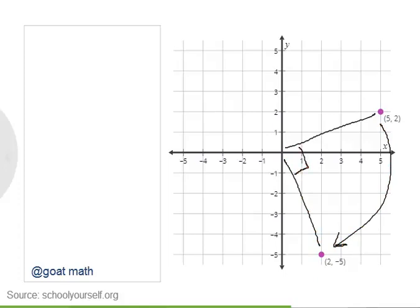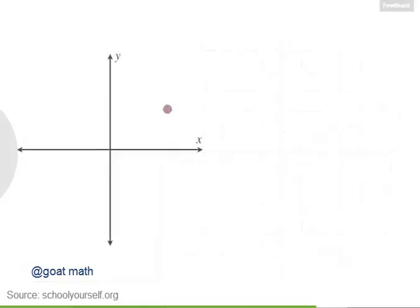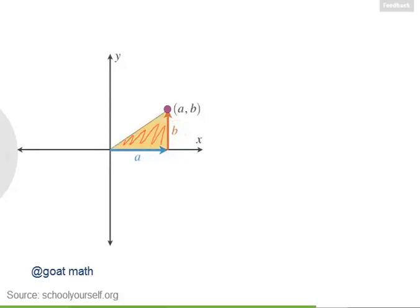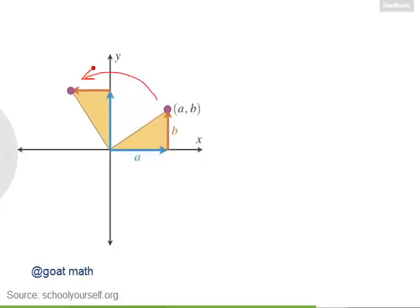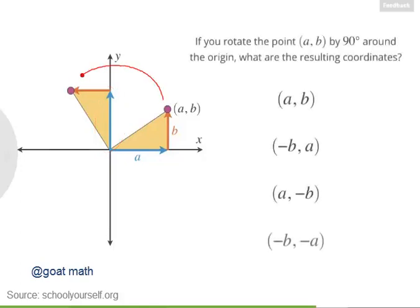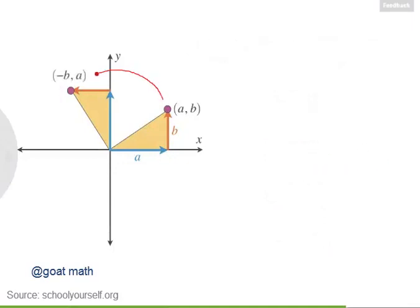Let's see if we can find some patterns in 90 degree rotations. On the coordinate plane, consider the point (a, b) — so it's a units to the right of the y-axis and b units up from the x-axis. If we rotate this point 90 degrees around the origin, then it winds up over here — now we're a distance b left of the y-axis and a distance a above the x-axis. So if you rotate (a, b) by positive 90 degrees around the origin, the resulting coordinates are (negative b, a).